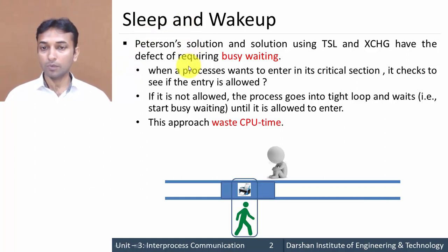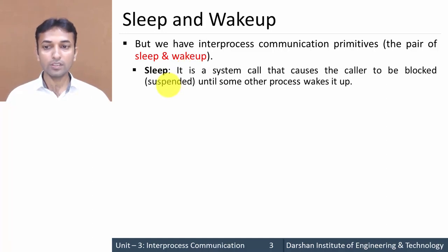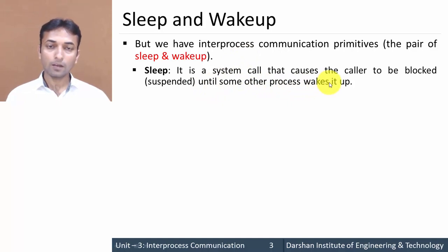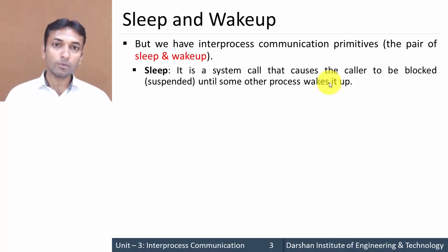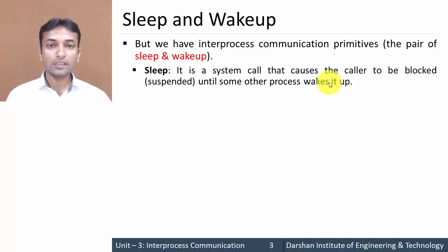Sleep and wake-up are two inter-process communication primitives. The first one is sleep — it is simply a system call that causes the caller process to be blocked or suspended until some other process wakes it up. Whenever any process wants to enter its critical section but another process is already there, this process is blocked until that other process exits the critical section.